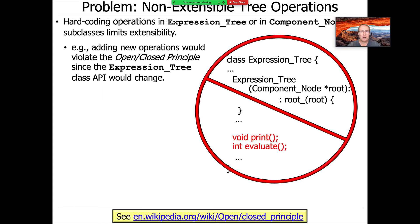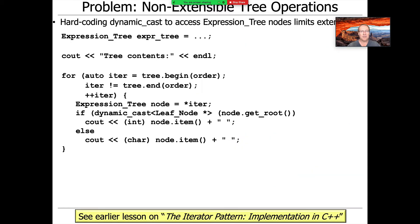One way to extend things would be to go back into the expression tree class and add new methods every time we wanted to do something new — print, evaluate, optimize, analyze, generate, whatever. But that would require changing the API of expression tree, which would be a serious flagrant violation of the open-close principle, which we talked about before in the context of things like the Strategy pattern and the Bridge pattern.